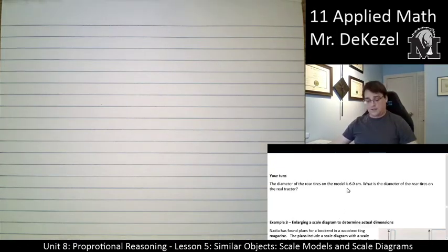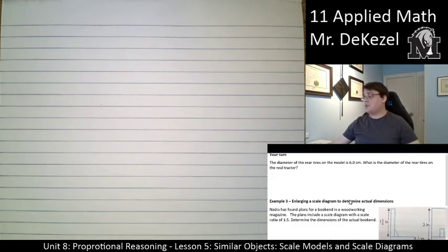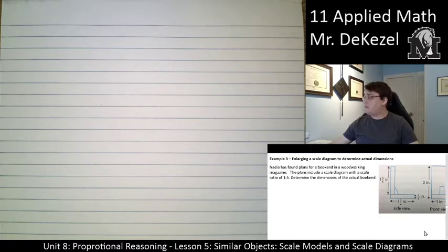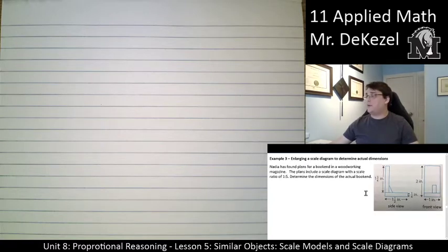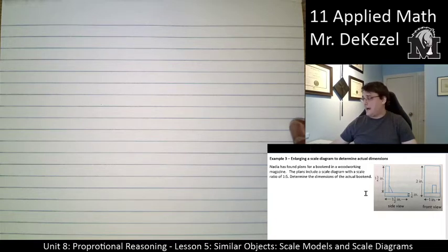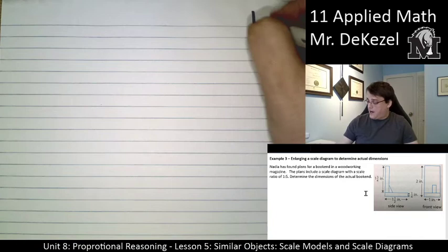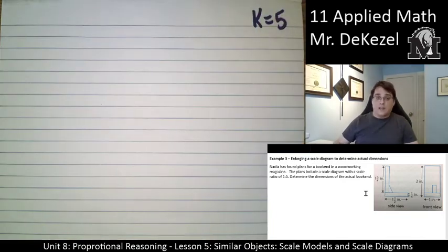Let's see. We've got two more examples. Nadia has found plans for a bookend in a woodworking magazine. The plans include a scale diagram with a scale ratio of 1 to 5. Determine the dimensions of the actual bookends. We're given a bunch of different views, and we're given the scale factor of 5. K is 5.